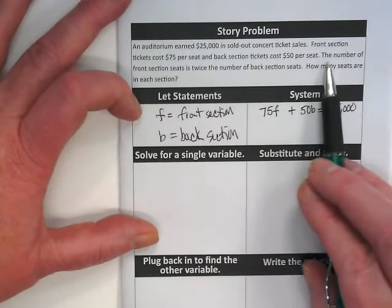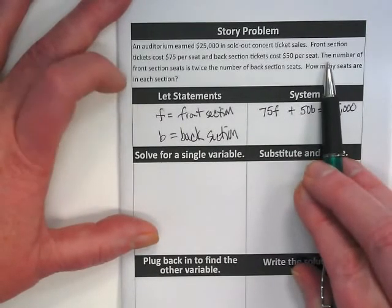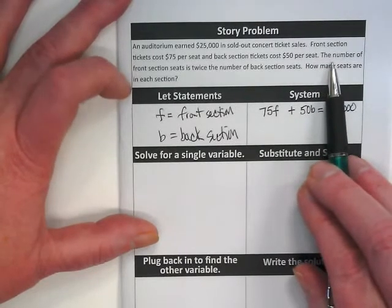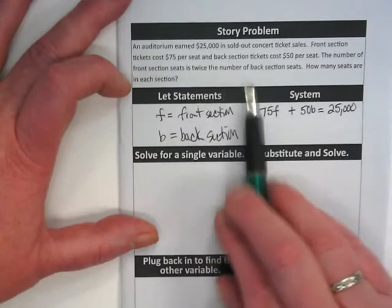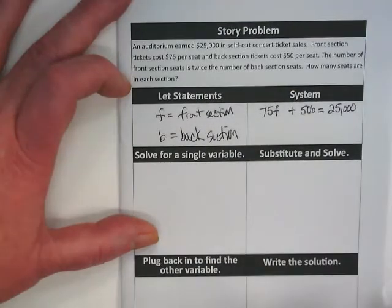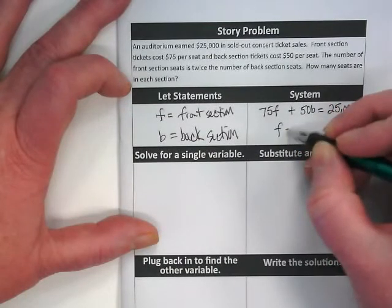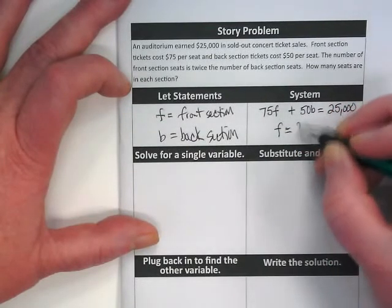Our second equation is coming from this right here. The number of front section seats is twice the number of back section seats. So front equals two times the back.